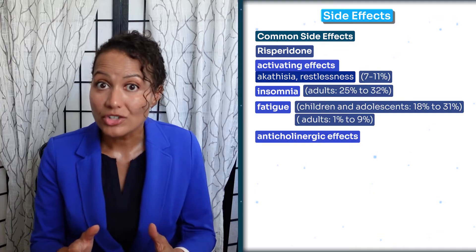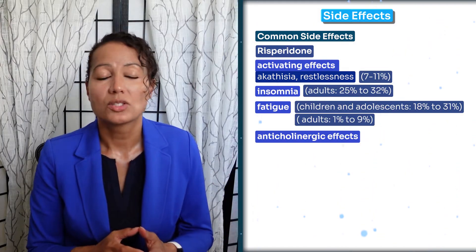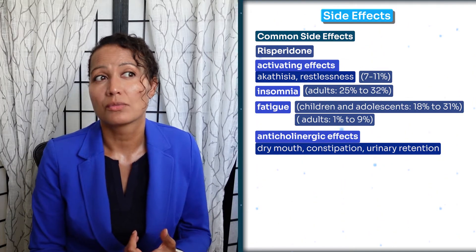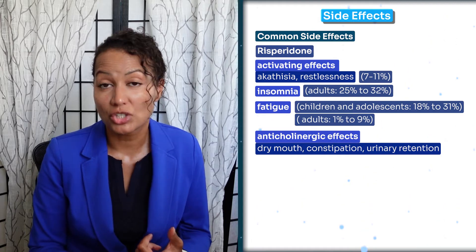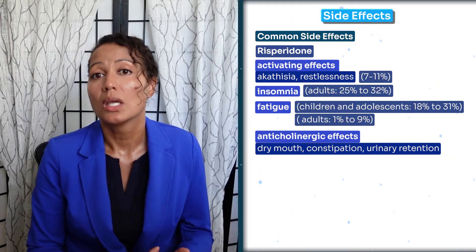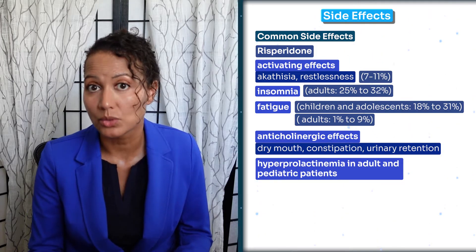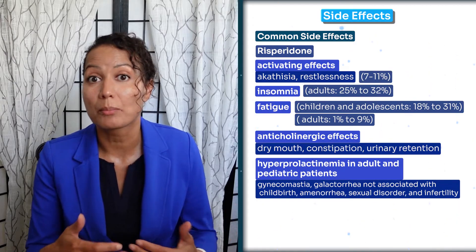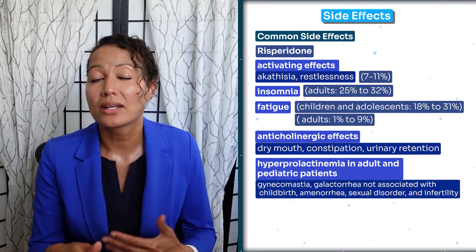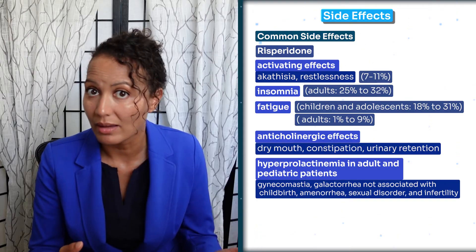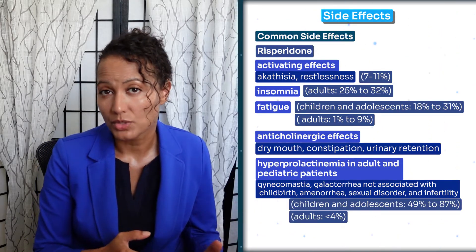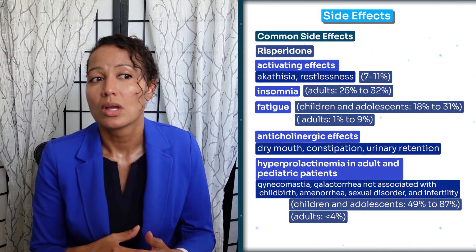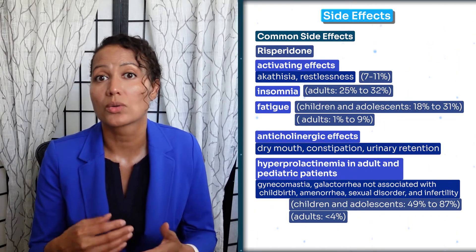There are also anticholinergic effects from histamine blockade, including dry mouth, constipation, and urinary retention. Another common side effect, typically seen more in children and adolescents than adults, is hyperprolactinemia — high prolactin levels. This can lead to galactorrhea, or expressing breast milk when not pregnant, and can also occur in males. Gynecomastia, or breast development, can also occur in males. In adults, this is seen in less than 4%, so it's definitely something to consider when using this medication for a child or adolescent.